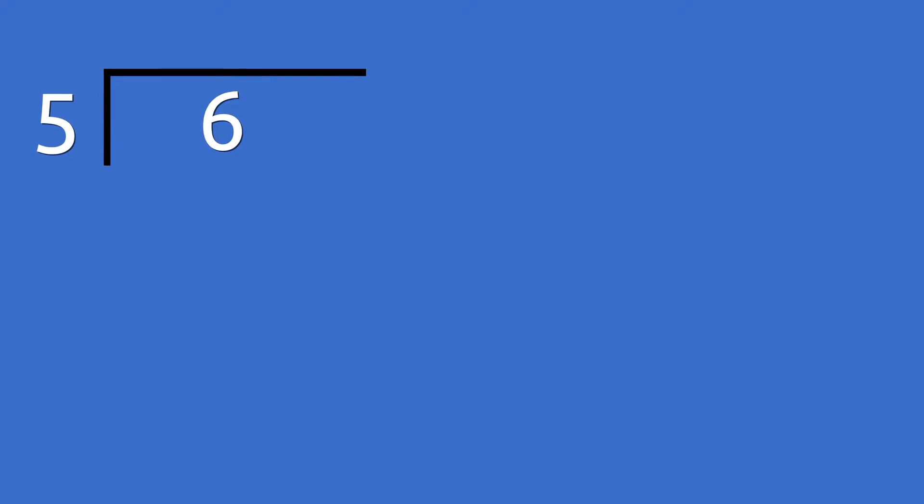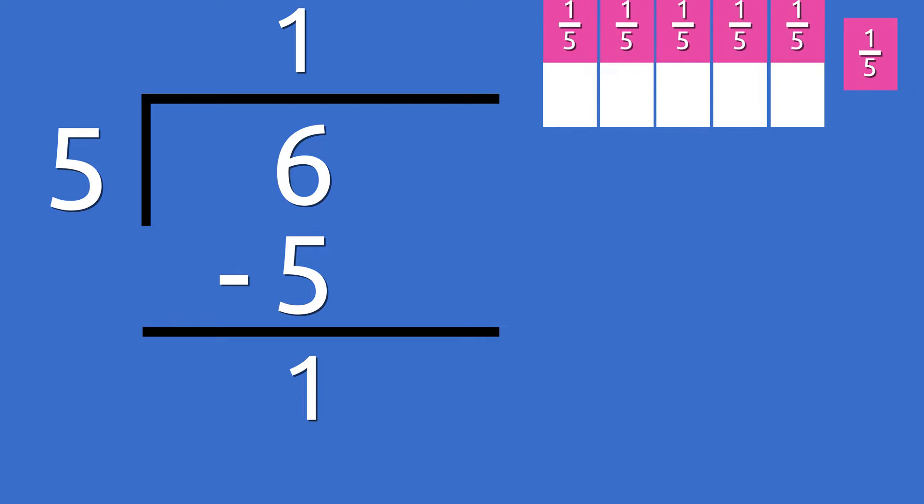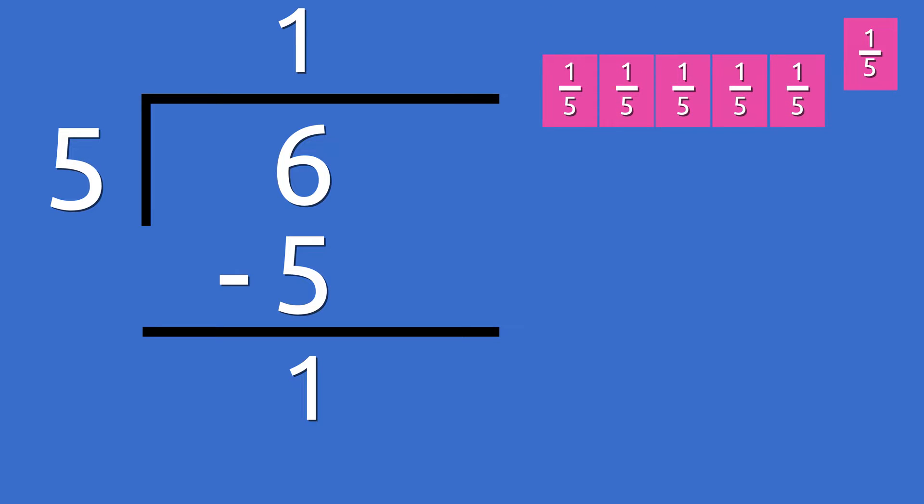6 divided by 5 is 1 with a remainder of 1. We can form one whole, which represents the 5 fifths needed to complete a whole, which leaves us with a remainder of 1, which represents the fractional part of 1 fifth. 6 fifths is equal to 1 whole and 1 fifth.